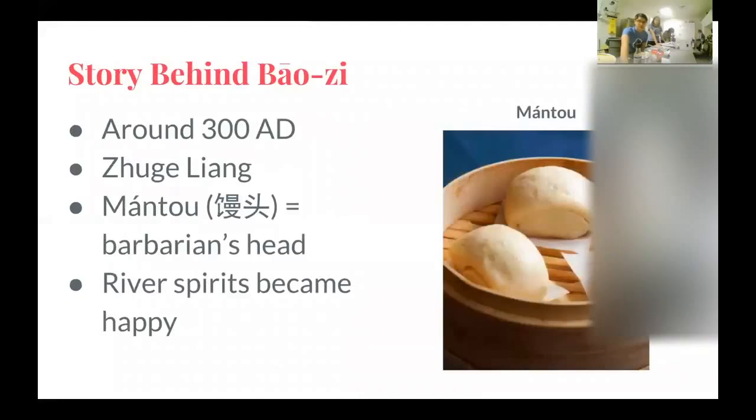The story behind Baozi is a little funny. So around 300 AD, 1800 years ago, an army general named Zhuge Liang and his men had crossed this raging river. But despite their best efforts, they could not cross it. They encountered a barbarian that was local to the area, and that barbarian told Zhuge Liang that the only way to cross the river is to appease the river spirits or to make them happy.